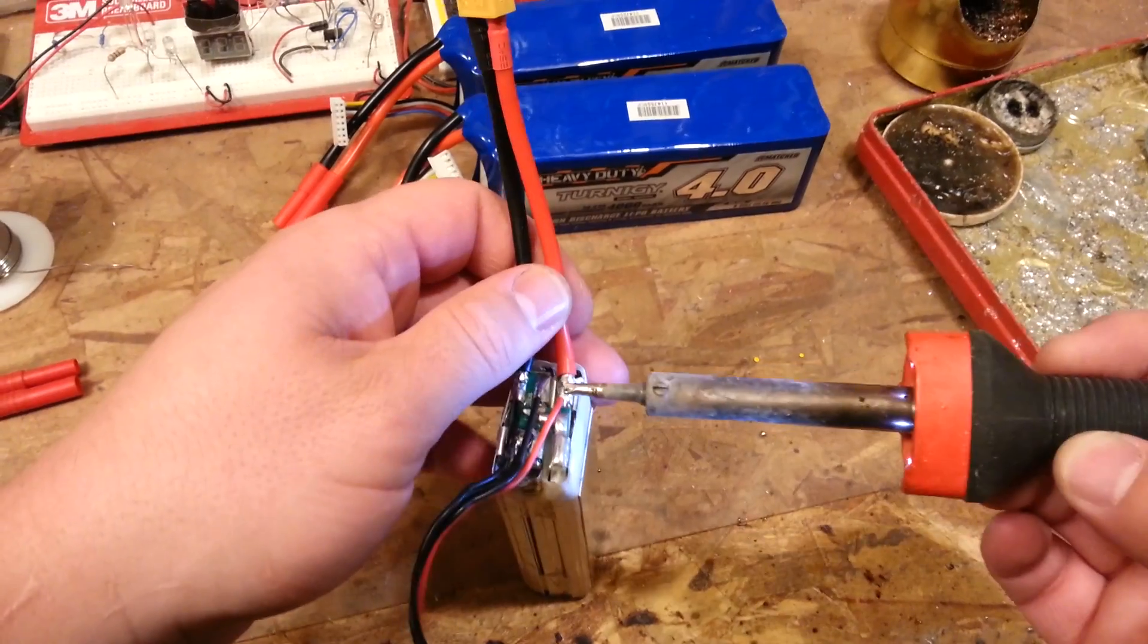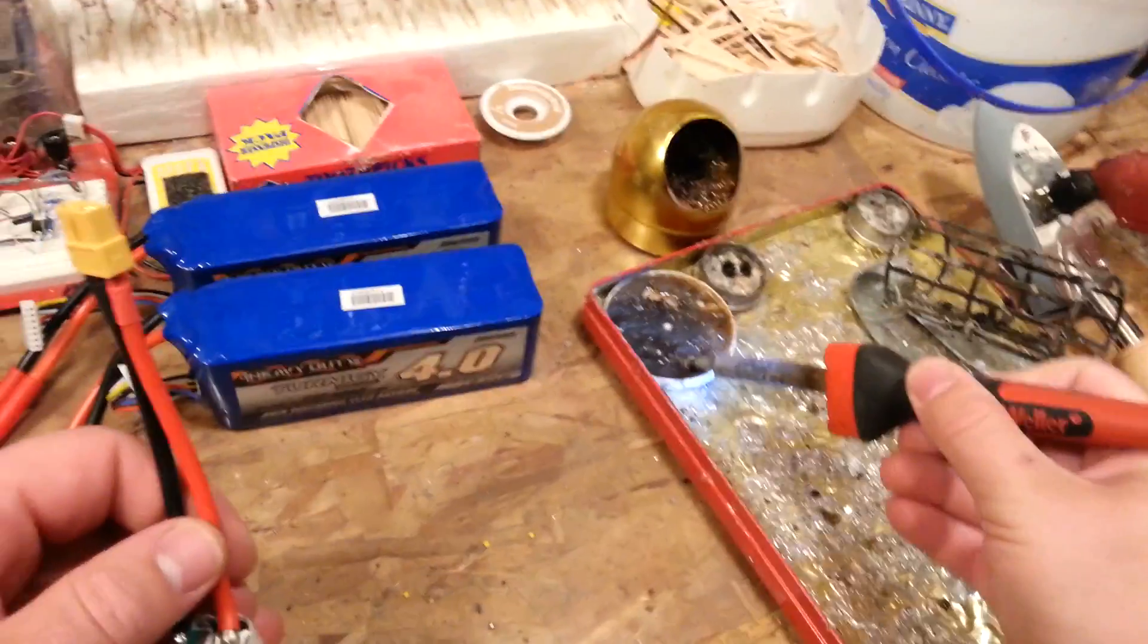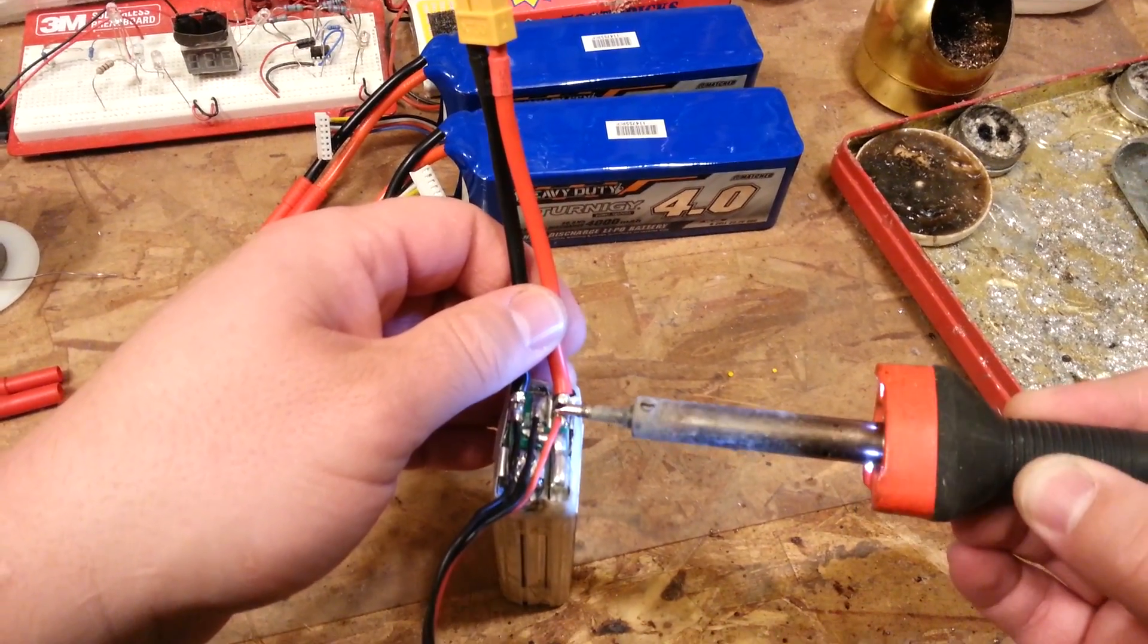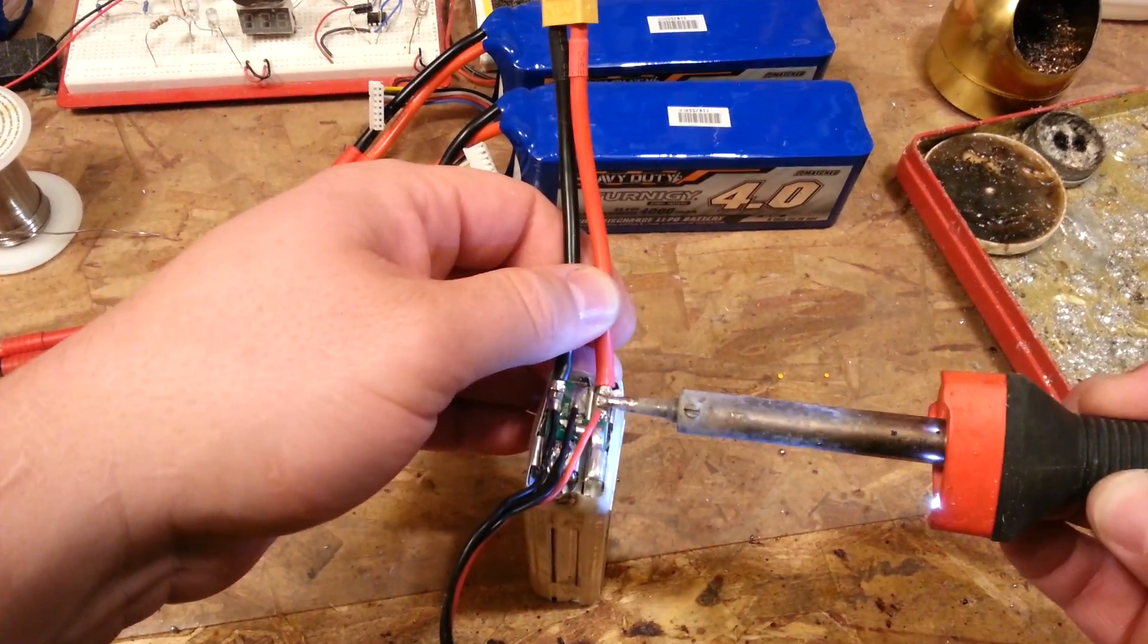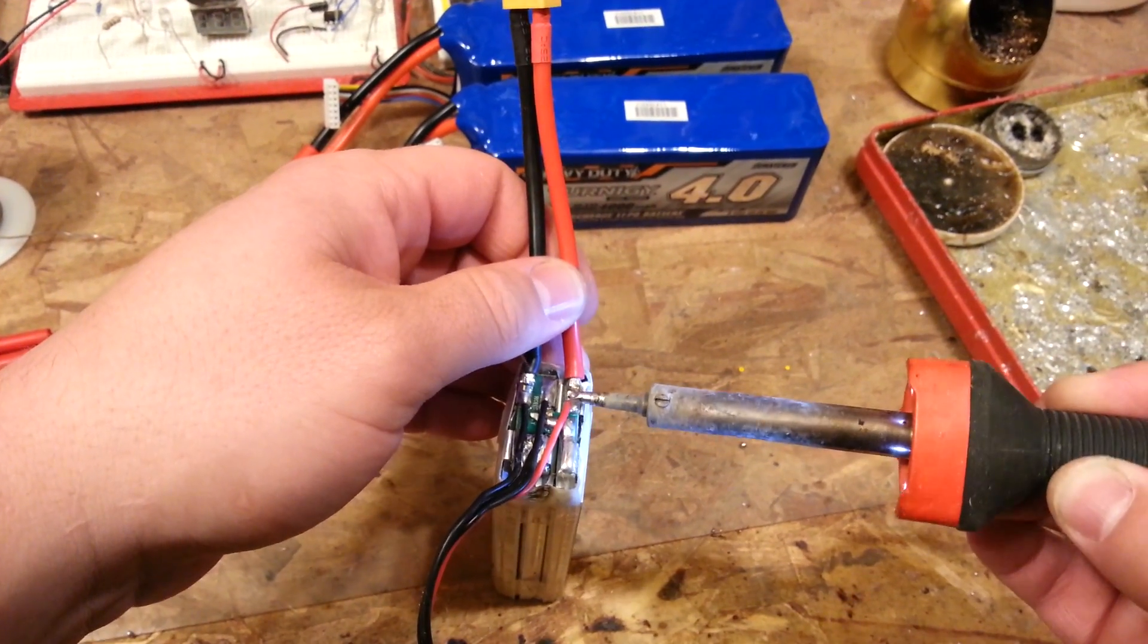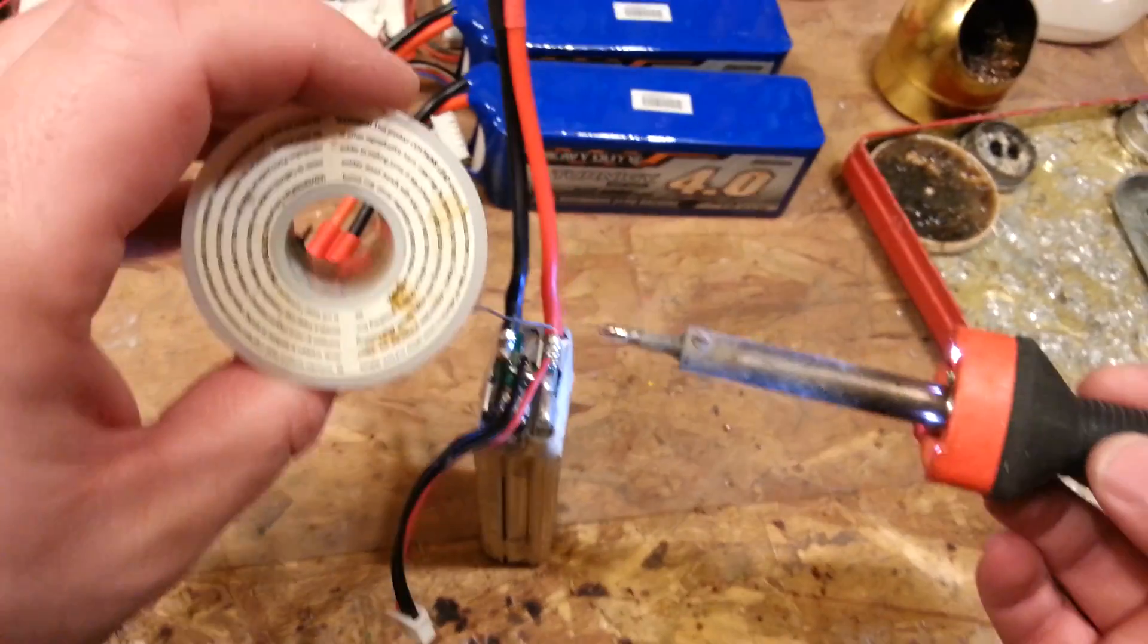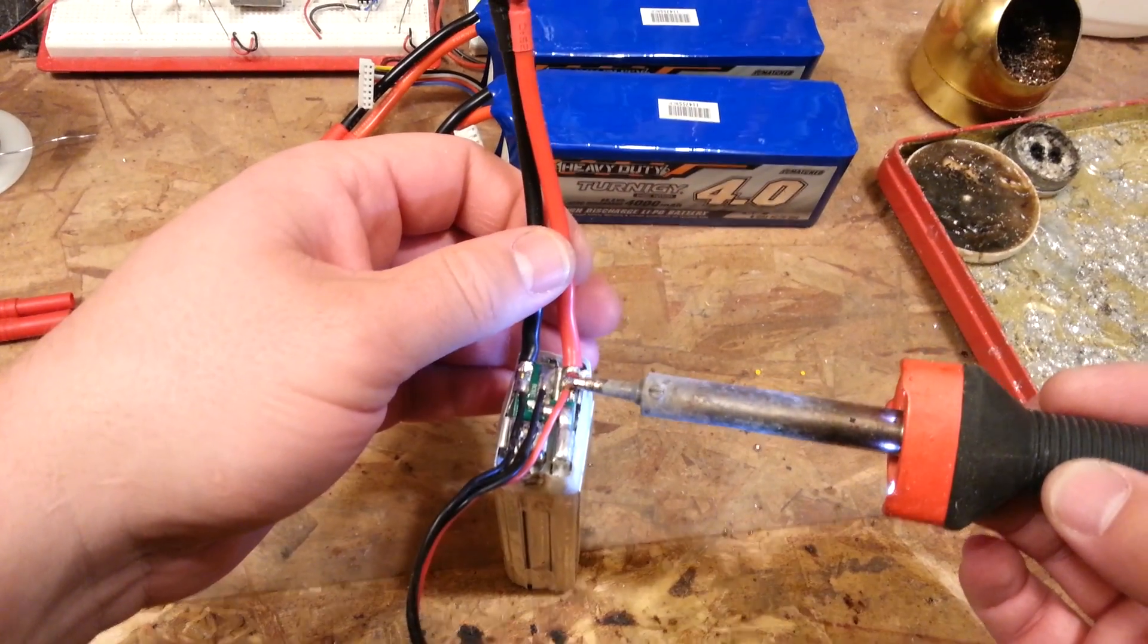Just get the soldering iron nice and toasty. Get a little bit of flux on there if you want to make it easy on yourself. Now this battery is just a piece of crap. I can't remember exactly what all happened to it but it was one of Esteban's batteries. So I'm just going to desolder this. You could also just cut it off, whatever trips your trigger I guess. Sometimes it's easier if you can feed in some fresh solder. It'll give you a little better contact area for your soldering tip.